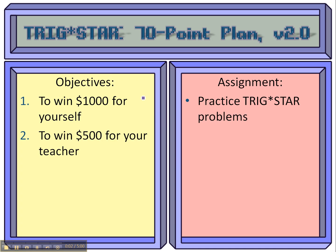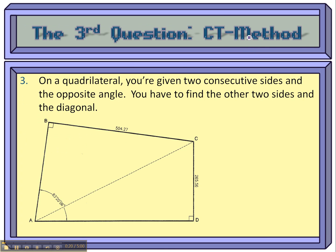Alright, so here's a second series on the TRIG*STAR 10-point plan. This is version 2 because on problem number 3, rather than using the law of sines and cosines with the other diagonal, we're going to use the diagonal that they give us and something we're calling the CT method, named after a student who pretty much came up with this method.